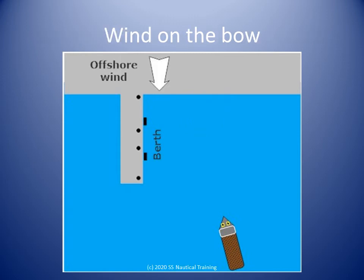In this diagram, the helmsman has to maneuver the boat with an offshore wind on her bow, pushing her boat away from her berth. This is a straightforward maneuver, provided the boat has enough power to match and just surpass the leeway caused by the wind.